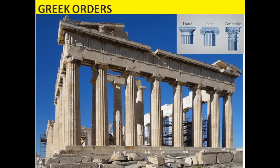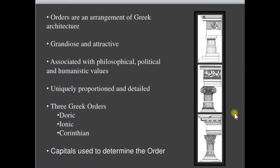Hello to all of you. Today we are going to discuss the Greek orders. There are three distinct orders in ancient Greek architecture: Doric, Ionic, and Corinthian. These three orders are arrangements of Greek architecture, grand and attractive, associated with philosophical, political, and humanistic values.